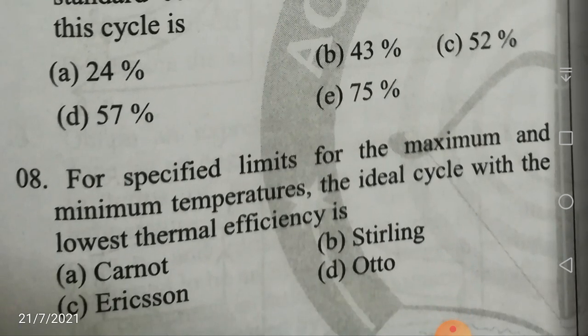Next question: for specified limits of maximum and minimum temperatures, the cycle with the lowest thermal efficiency is which one? The Carnot cycle must have the highest efficiency because it is a reversible cycle — any reversible cycle between two fixed temperatures has the highest efficiency according to Carnot's theorem. So you have to choose among Stirling, Ericsson, and Otto cycles for the lowest efficiency. Please check the answer.